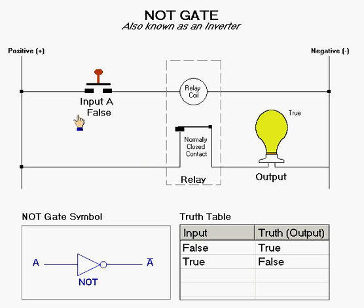When you have an input of false, the relay coil is de-energized and the relay contact closes.